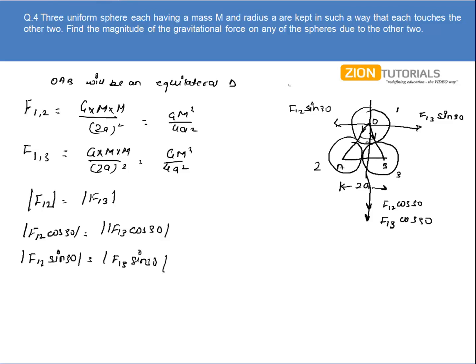Now clearly that F12 sin of 30 and F13 sin of 30 are equal in magnitude but are opposite in directions. So they get cancelled.